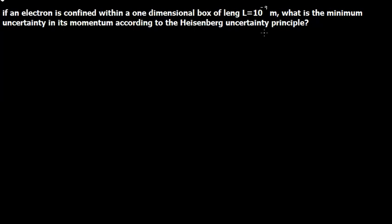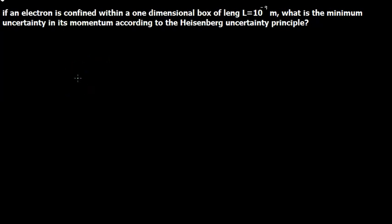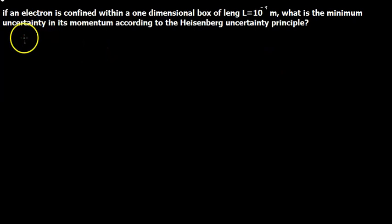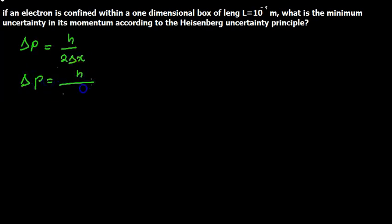How can we solve this problem? In a one-dimensional box, the uncertainty in position dx is equal to the length of the box, which is denoted with L. According to the Heisenberg uncertainty principle, the uncertainty in momentum dp is given by h divided by 2 delta x, which is also equal to h divided by 4π delta x.